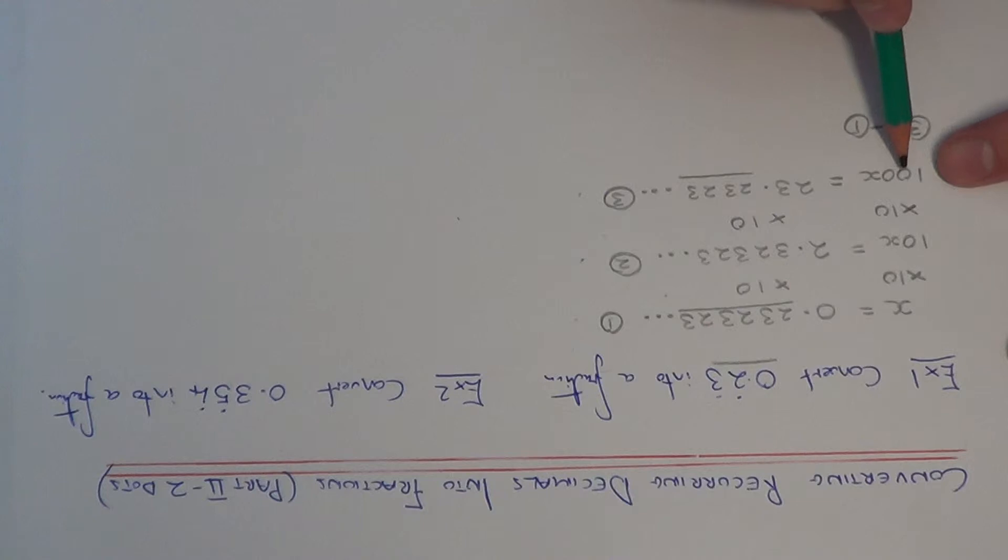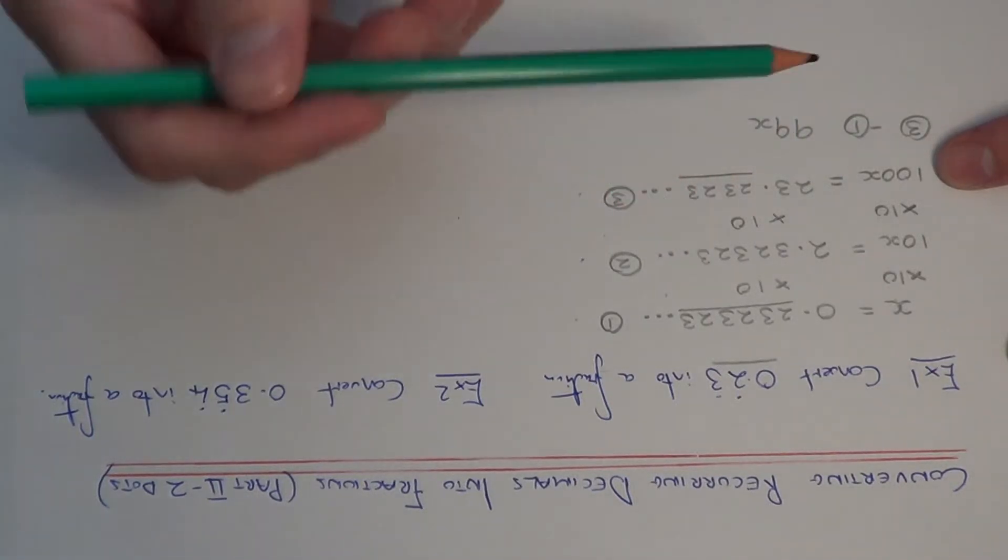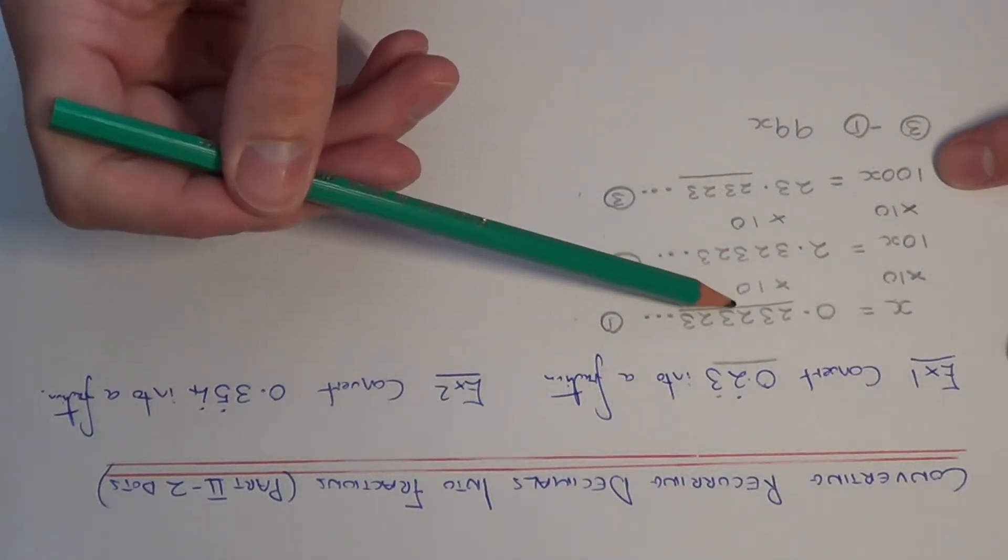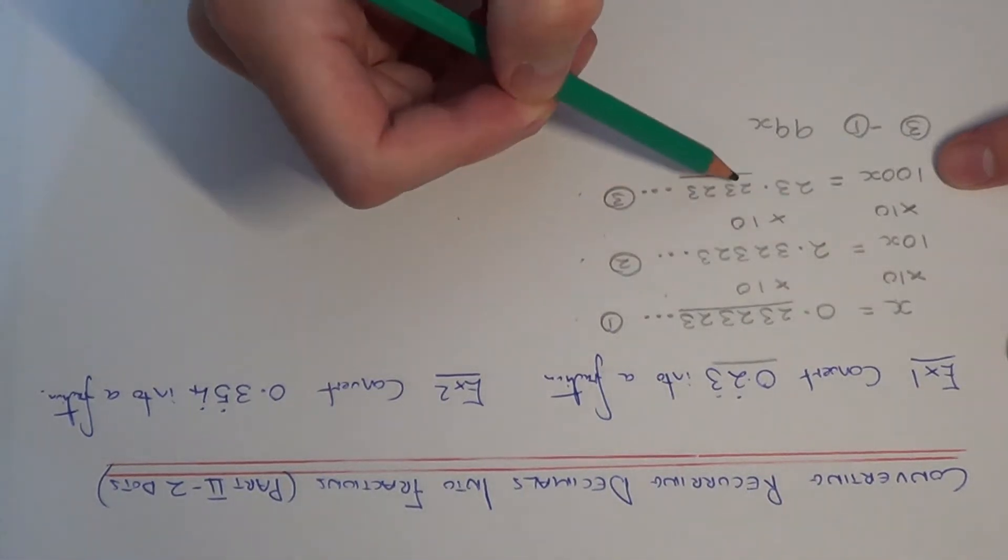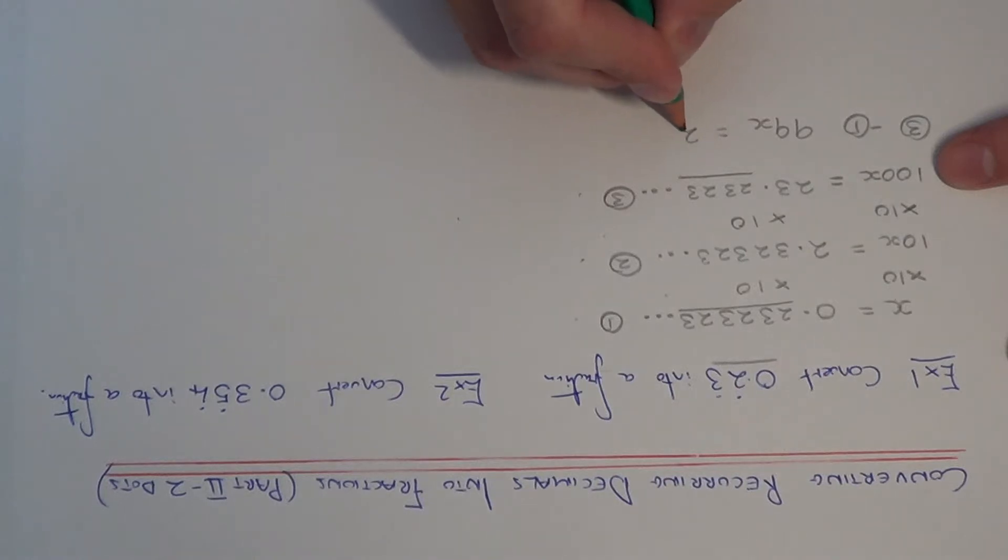So on the left hand side I will have 100x take away 1x, that will give me 99x, and if I take away 23.2323 minus 0.2323, I only have to take the whole numbers away because I know the decimals cancel. 23 take nothing is 23.